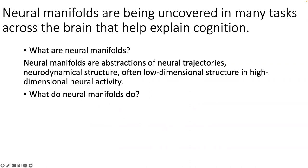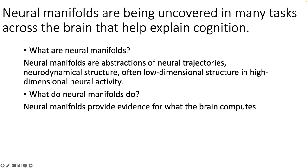What do neural manifolds do? I will argue that neural manifolds provide evidence for what the brain computes. They are being revealed across different brain regions and different task contexts. I'll illustrate this role with the example of temporal interval estimation. While I only have time to present a single example, there are numerous such examples, especially in the last ten years where it has really exploded — finding this low-dimensional structure in high-dimensional neural activity, principally from the study of multi-single neuron activity recorded from many individual neurons in the mouse, monkey, or even humans.